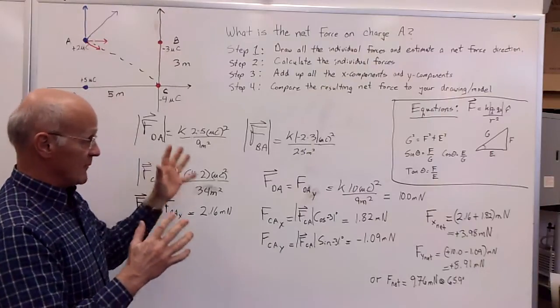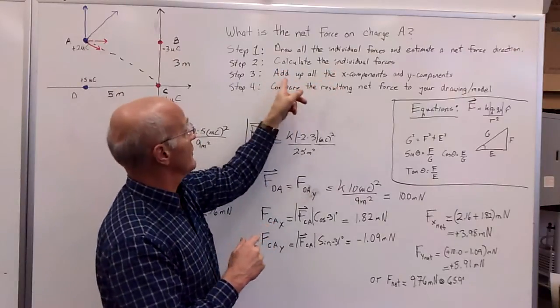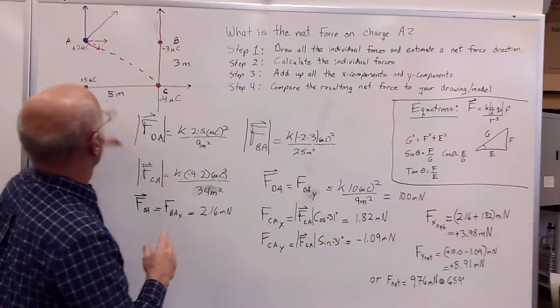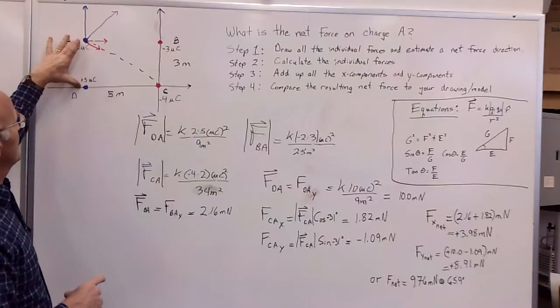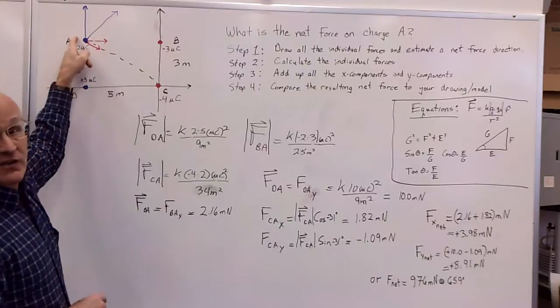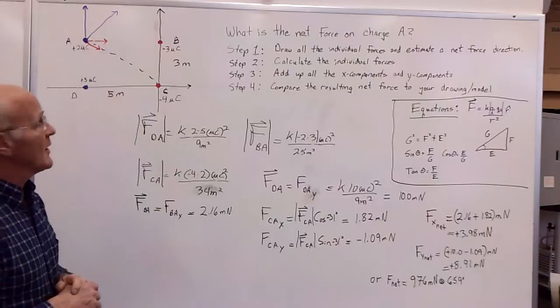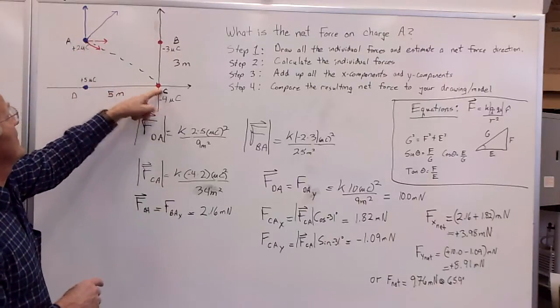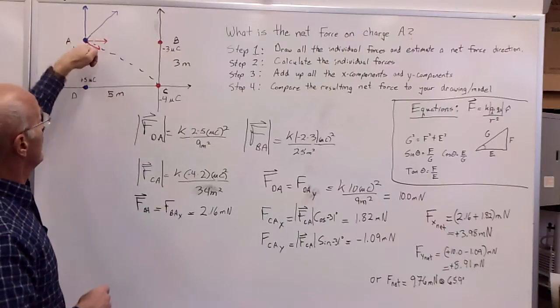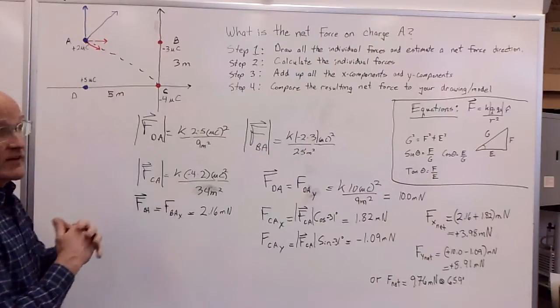All right, and so now we've added up all of our forces, and now all we do is we've calculated all our individual forces, now we must look at adding up all the X and Y components, and so when I look at it, I see I've got a couple easy instances here, this one here is going to be all in the positive Y direction, the force on A due to charge B is going to be all in the positive X direction, the hard part of this problem is then figuring out what's going to happen because of charge C, and so we see that we're going to get a force down and to the right, so there'll be a positive X component and a negative Y component, and so that's the key thing to keep track of when you have problems like this that are two-dimensional.